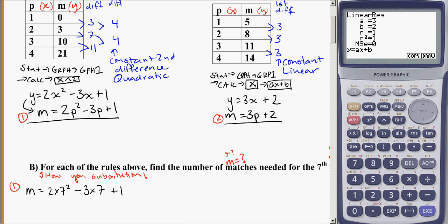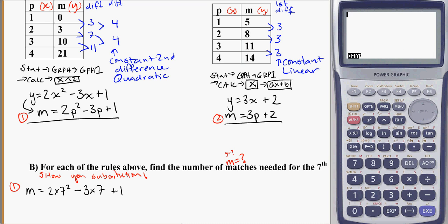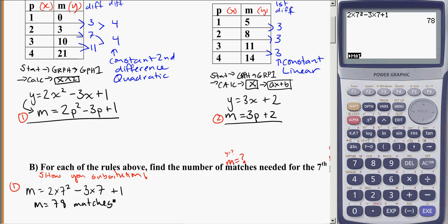And we can put that straight into the calculator, go into our normal menu. So menu, go into your run. And I just enter in the second part of the equation here. Two times seven squared minus three times seven plus one. And we get 78. So m is equal to 78 matches. So for the seventh pattern, I'll need 78 matches for this quadratic.